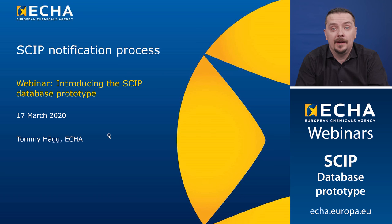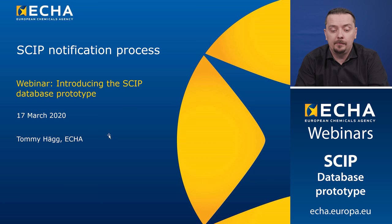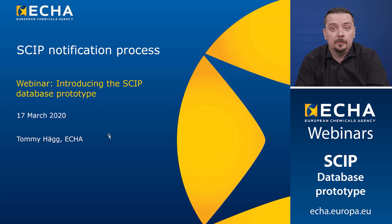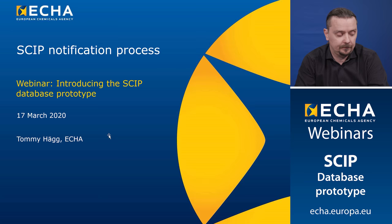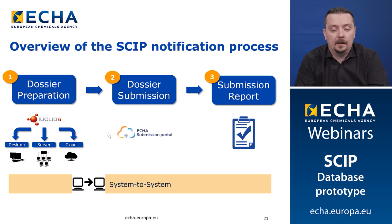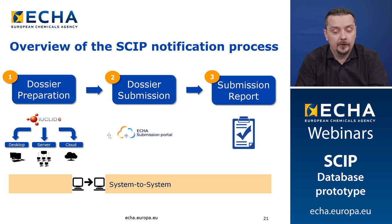My name is Tommy Hegg and I work here at ECHA in the Computational Assessment Unit. During the next minutes, I will present the SCIP notification process that we put in place for the SCIP prototype. I will also present the system-to-system process made available for those who need to submit data in larger amounts. To simplify understanding of the notification process, we cut it down into three concepts: first, dossiers need to be prepared; second, the dossiers need to be submitted; and third, the submission process needs to be followed up and you need to receive your submission report.